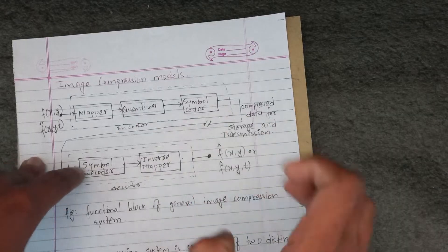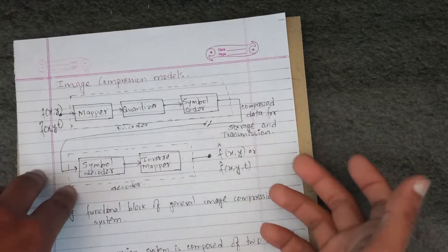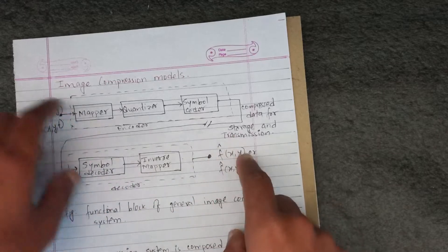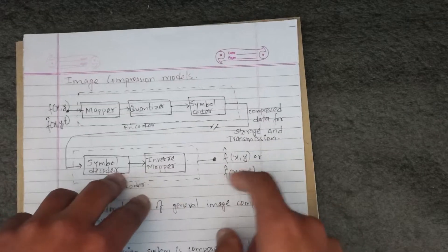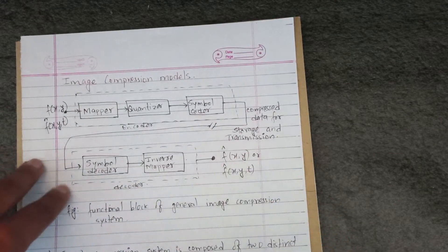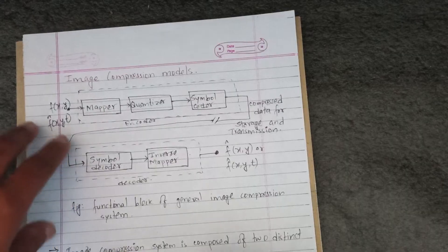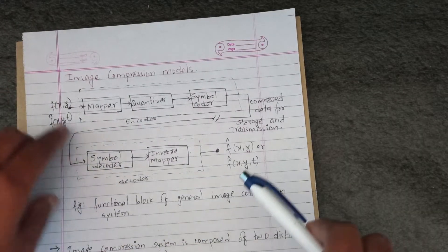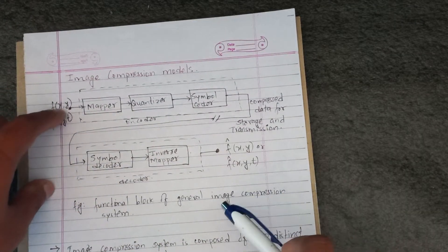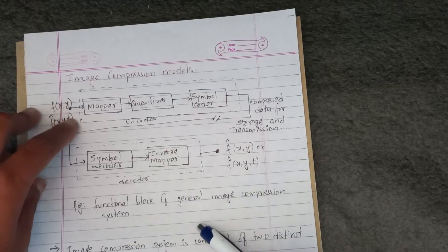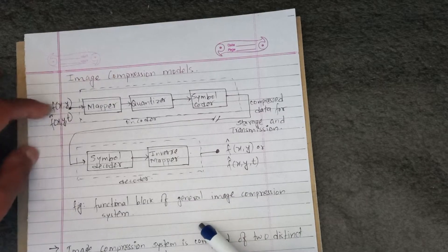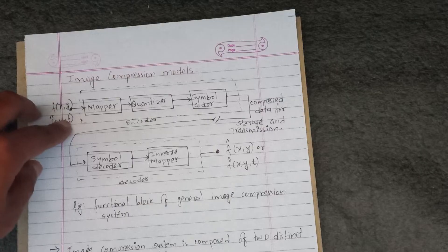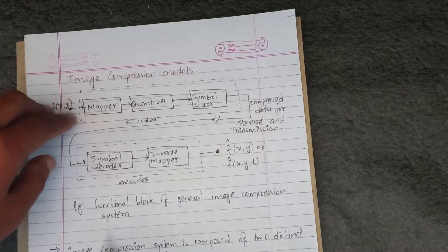The image is then passed to the decoder, which reconstructs the original image. The input image goes through the encoder stage.